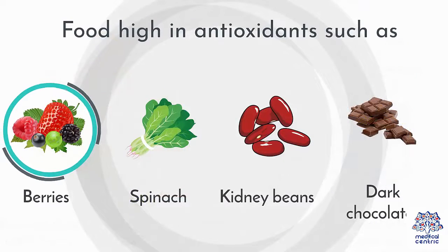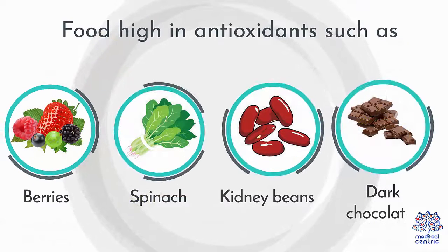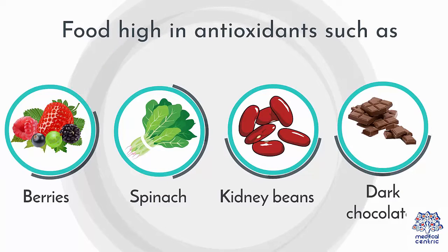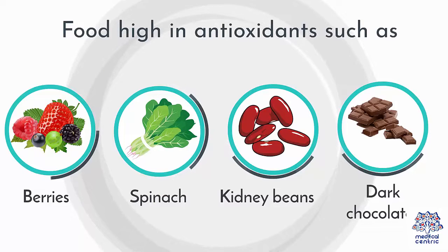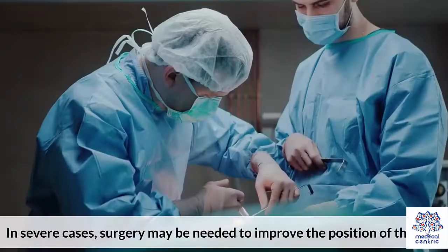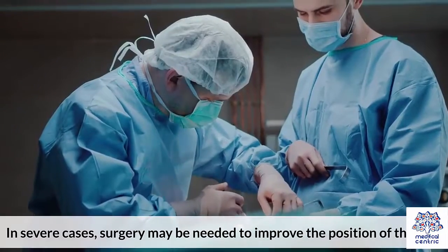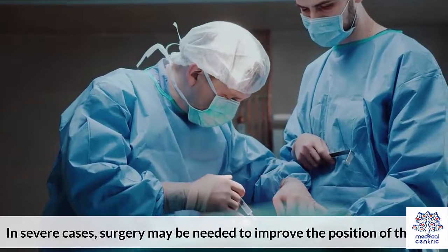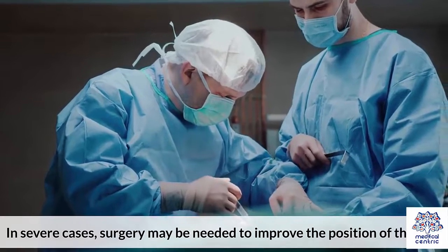Foods high in antioxidants, such as berries, spinach, kidney beans, and dark chocolate, may also help to reduce inflammation. In severe cases, surgery may be needed to improve the position of the joint.